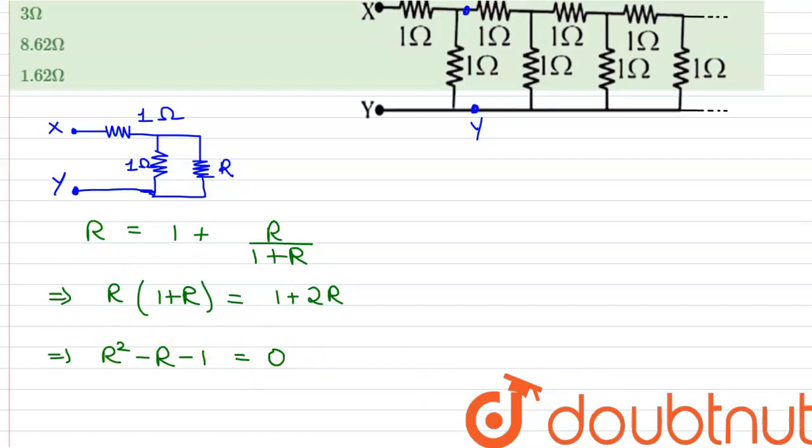This is a quadratic equation, and we can find out its roots, which is R is equals to 1 plus minus under root 1 plus 4 divided by 2.